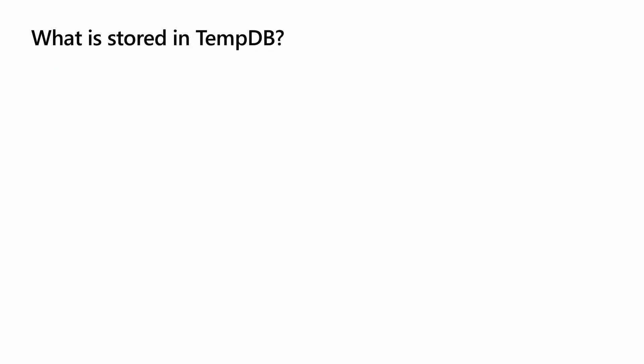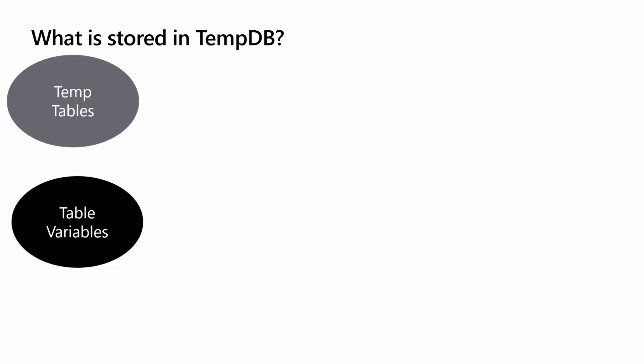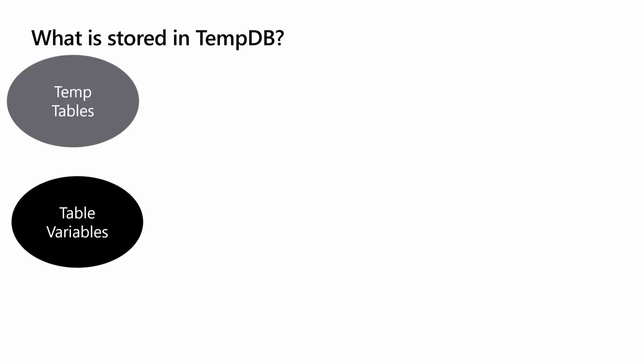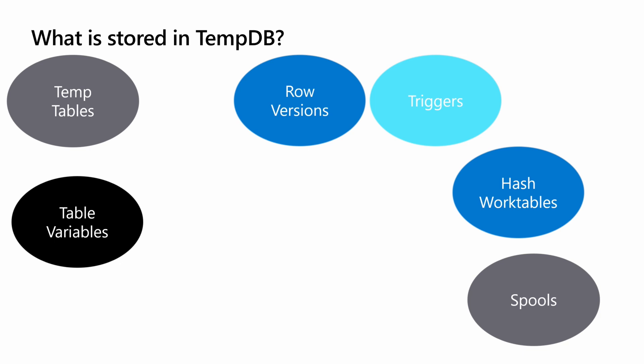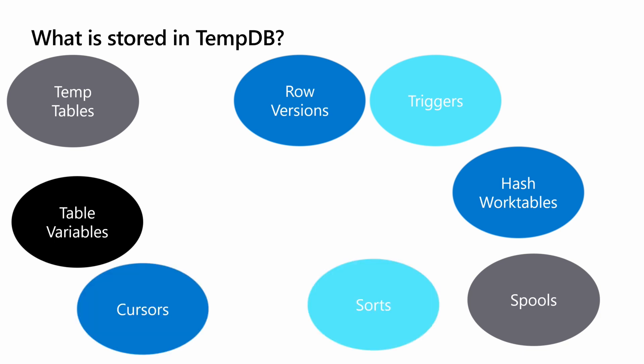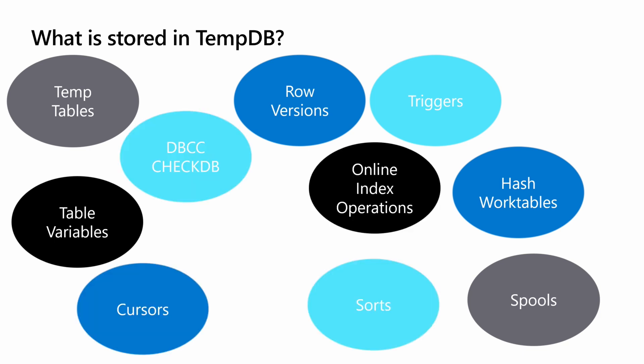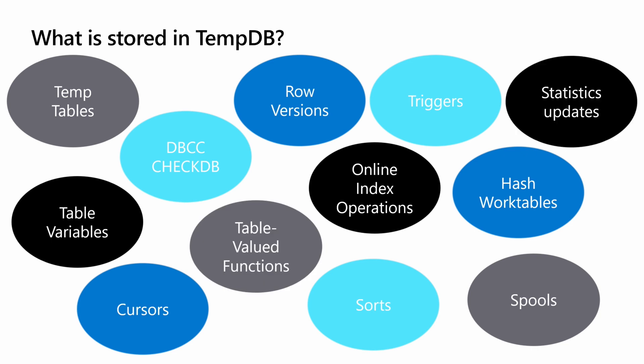Even if you're not using temporary tables explicitly, chances are you're using TempDB. It's of course used for temp tables and table variables, but it's also used for things like the row version store, for snapshot isolation, for hash work tables, for query processing, for spools in query processing, for triggers, for cursors, sorts, online index operations, checkDB, table valued functions, even statistics updates. There are many, many different operations in SQL Server that use TempDB for temporary storage.